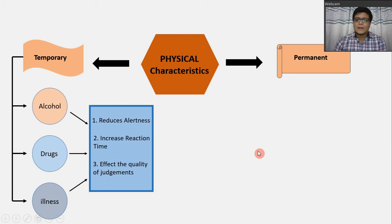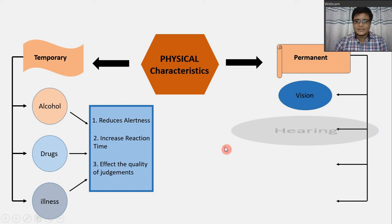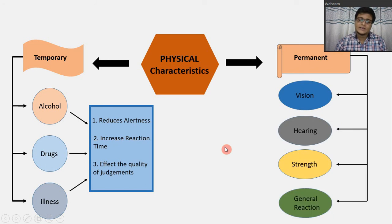Now, coming to the permanent physical characteristics. These are our vision, hearing, strength and general reaction. So, these are our permanent physical characteristics.